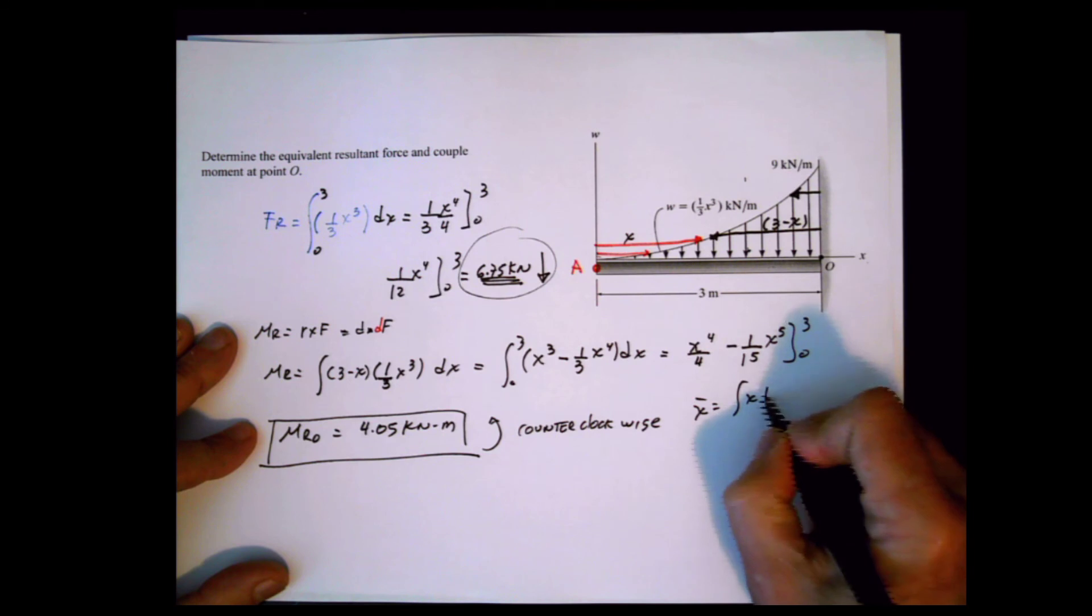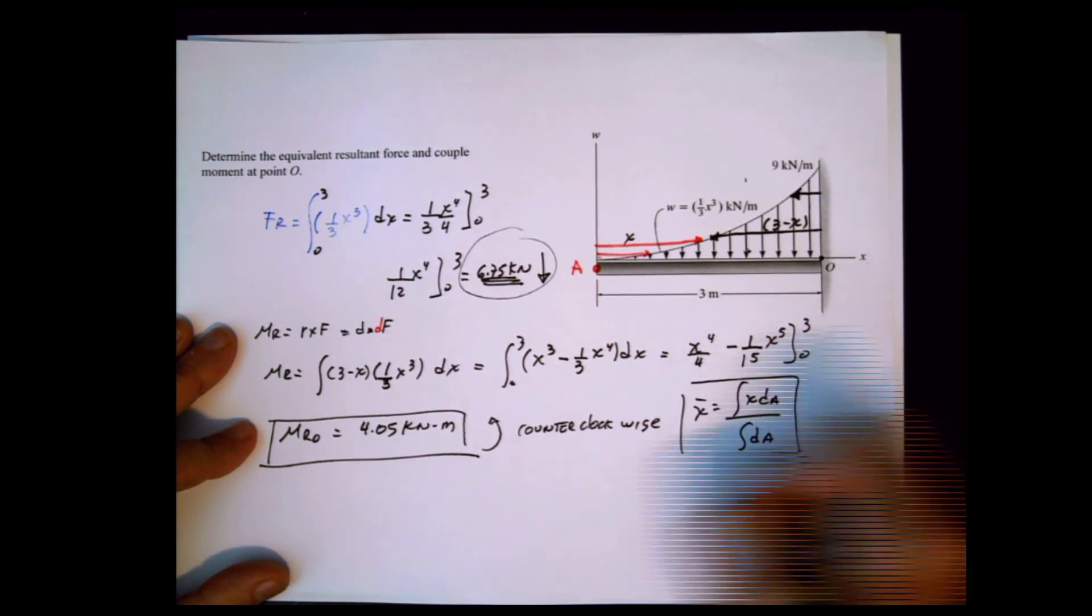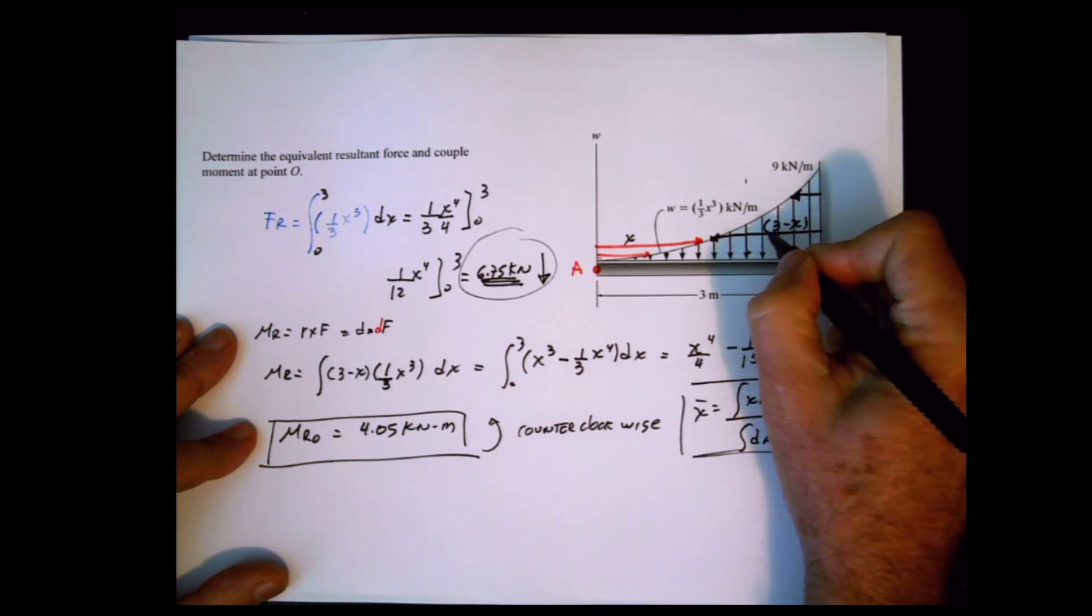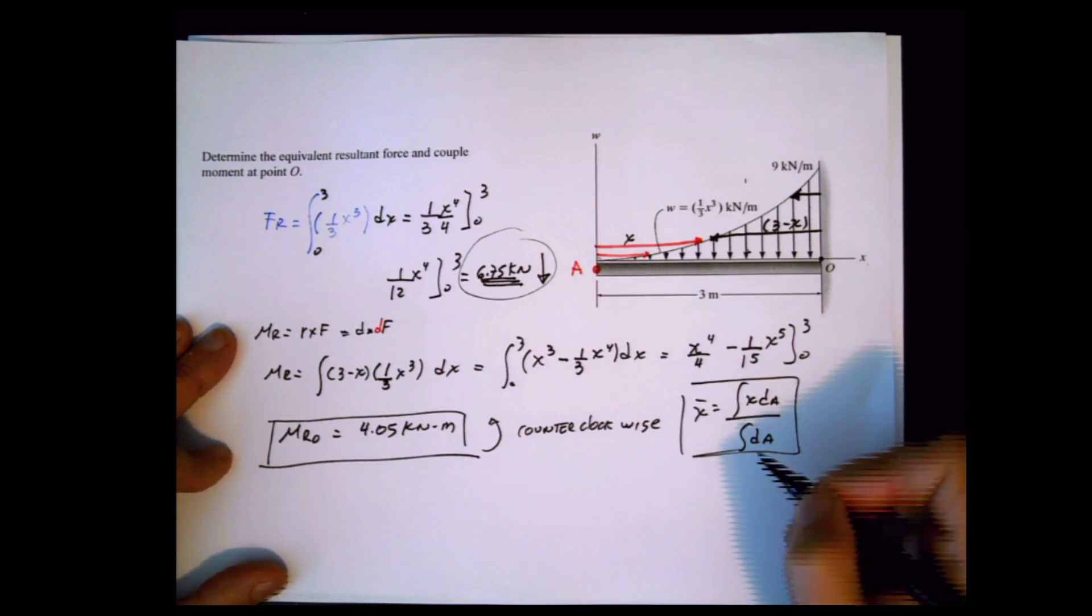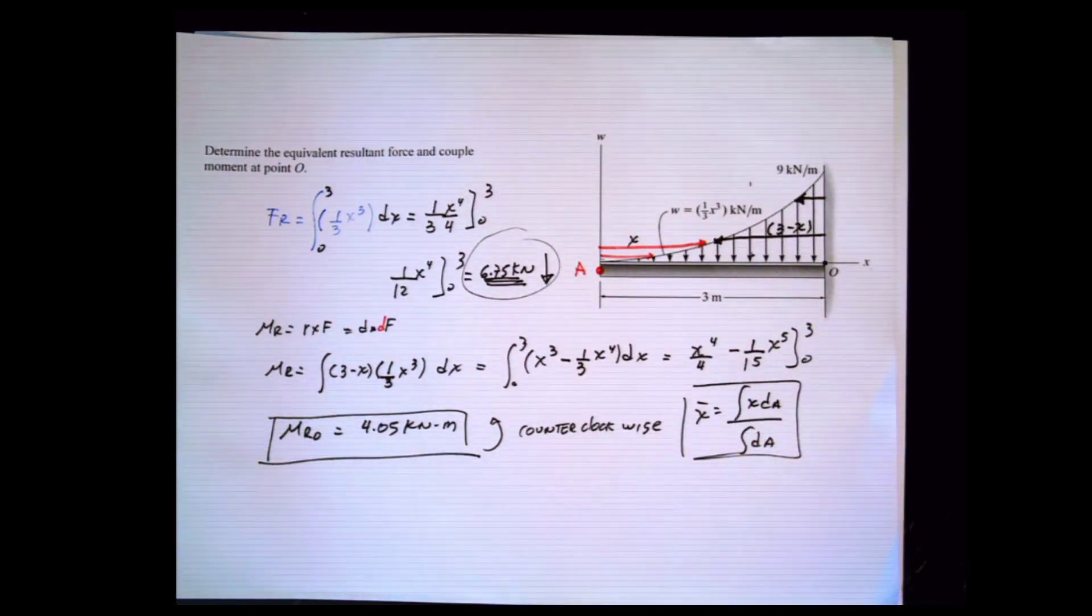If you determine the centroid using the integral of x dA divided by the integral of dA, and find the distance x-bar from point O, multiplying by the resultant force gives the same result. If you know how to do that, go check it.